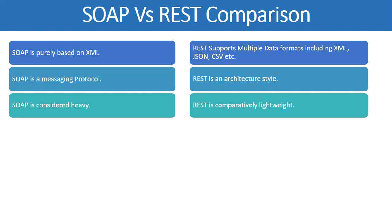REST is comparatively lightweight because you don't have to create that type of complex XML structure. For different cases with different verbs, you can utilize the standard HTTP structures and functionalities — like passing parameters directly in the request URL, using path variables, or passing a request body in JSON format, which consumes less bandwidth compared to the XML payload used in SOAP.